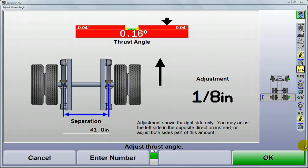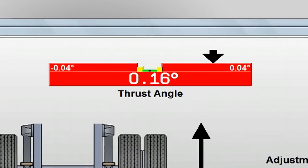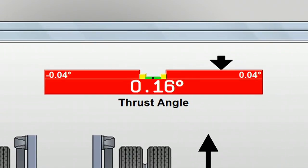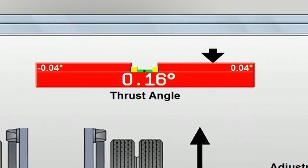At this point, the aligner looks at the alignment of the rear axle. If it's not straight ahead within tolerance, the bar graph will be red. The position of the arrow indicates the direction it's pointed. In this case, the axle is pointed to the right.